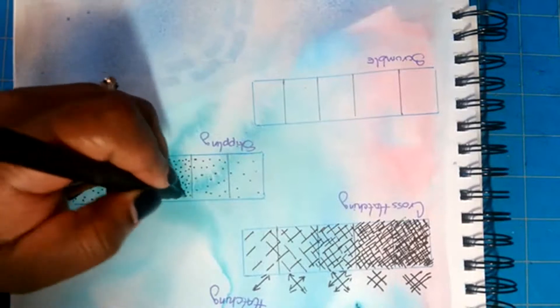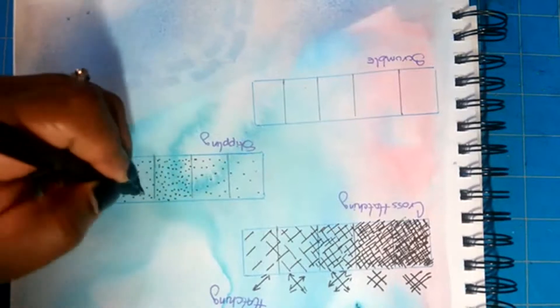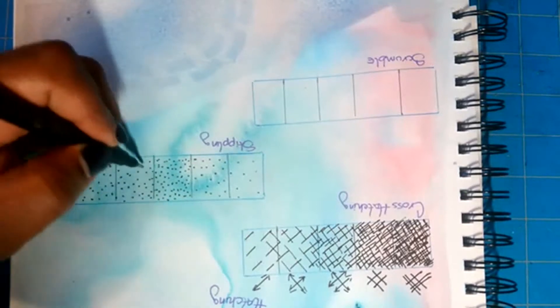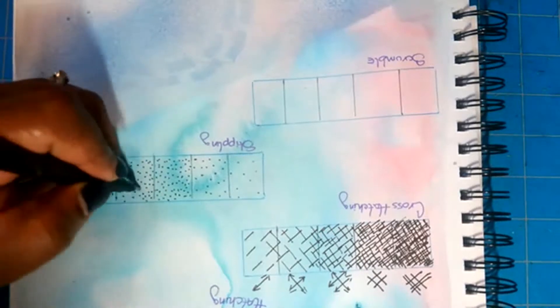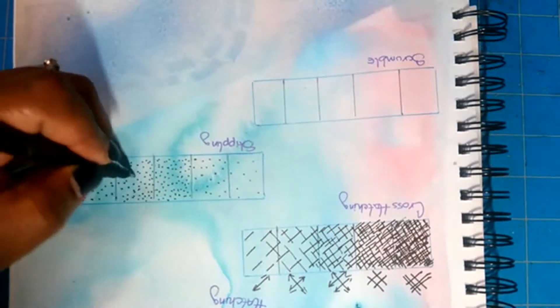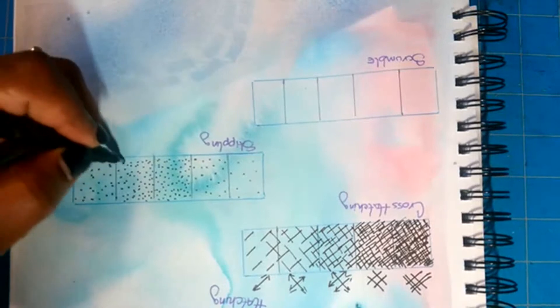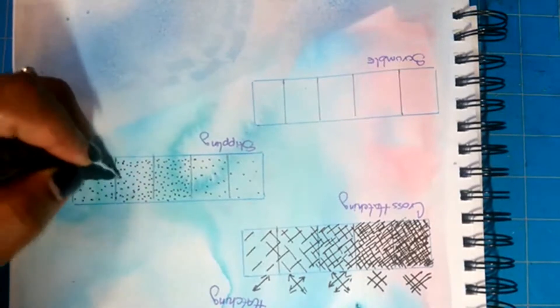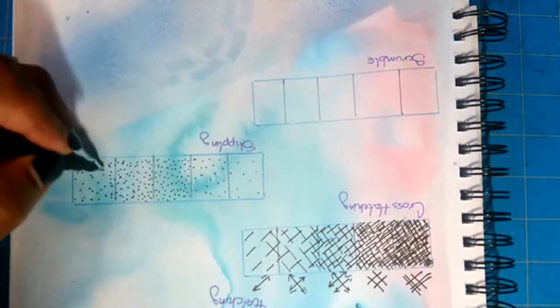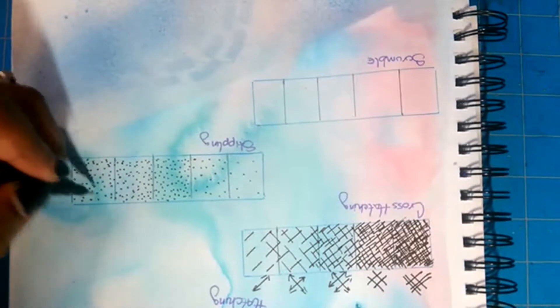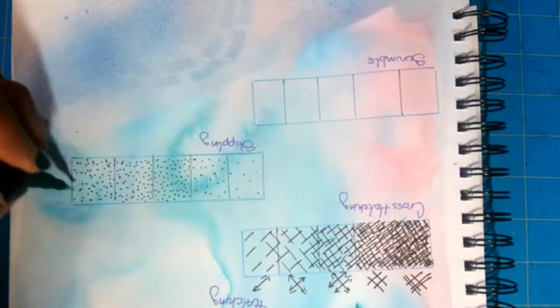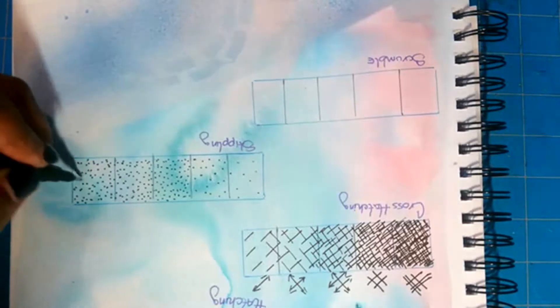Make sure that you are keeping control of your mark making tool. On this one it is easy to get too dark too soon, but basically the closer that your dots become, the darker the value that you will be creating. So the more dense that your dots become, the darker your value.